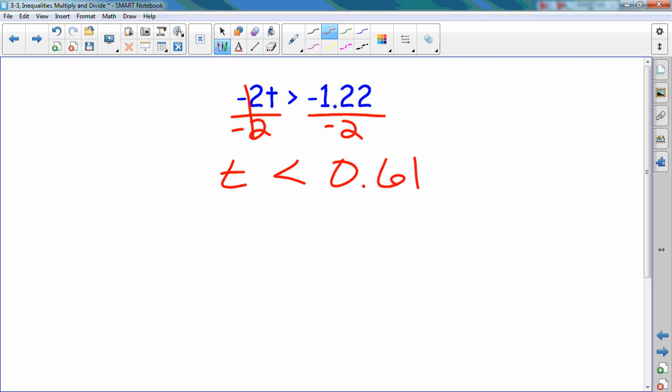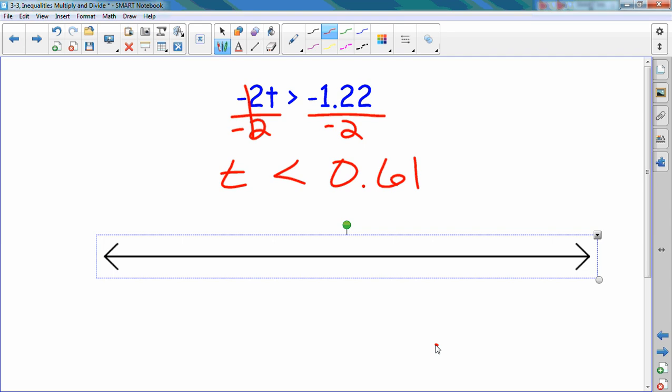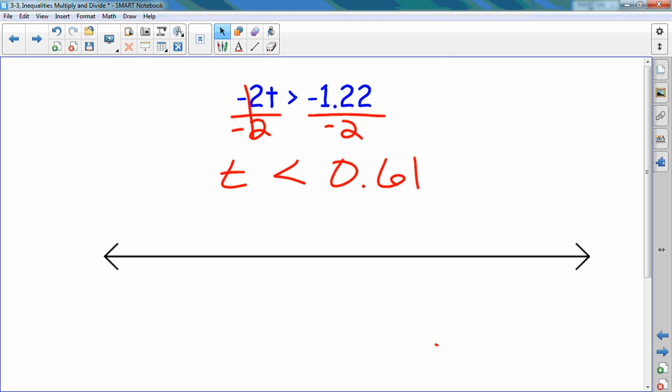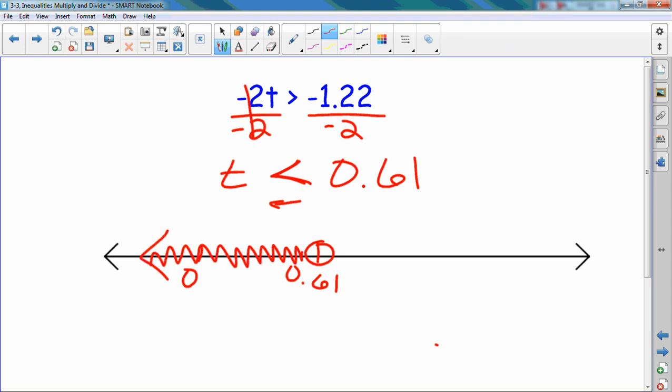And then I graph that inequality. The variable's already on the left side, so I don't need to move my variable. Open dot on 0.61, make sure you put your 0 in there so I know where you're at on the line. Which way is my arrow going? To the left, because the less than symbol is going to the left. So we're going this way. Open dot. Questions? Seems pretty easy.